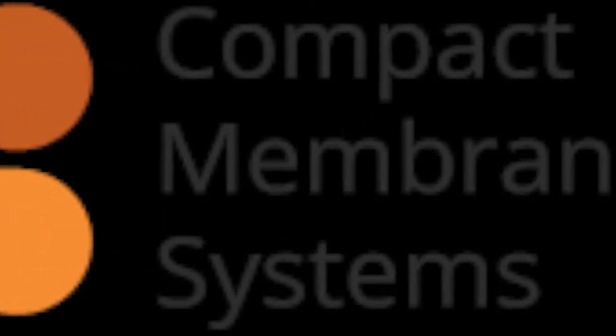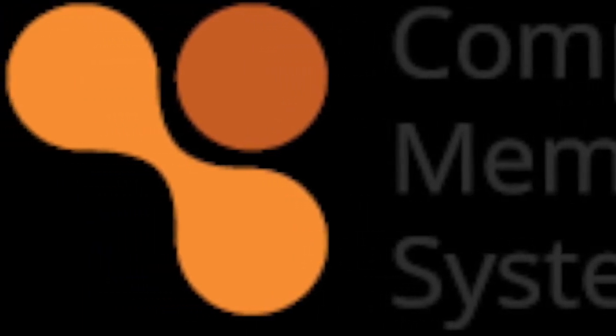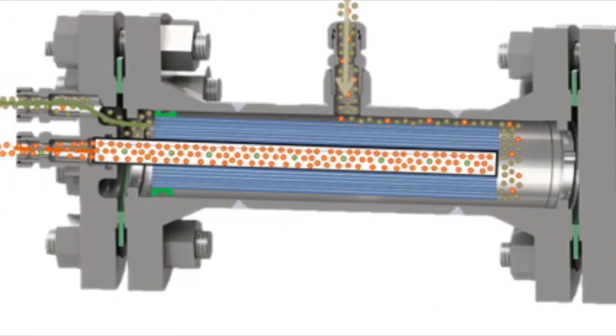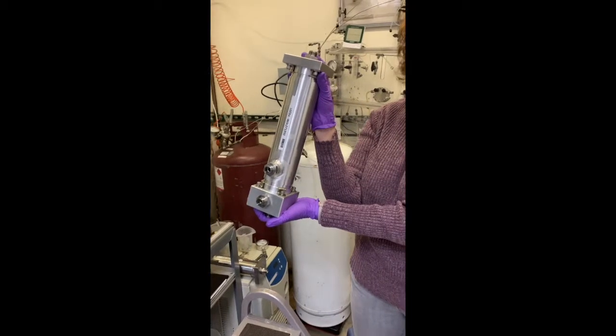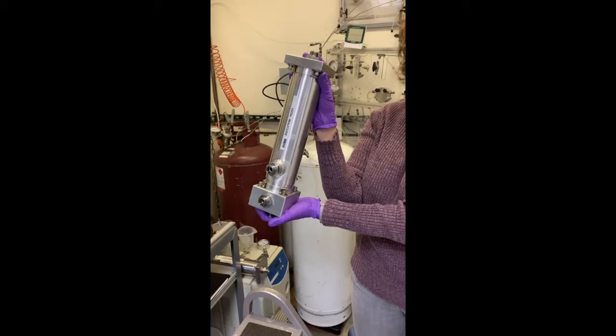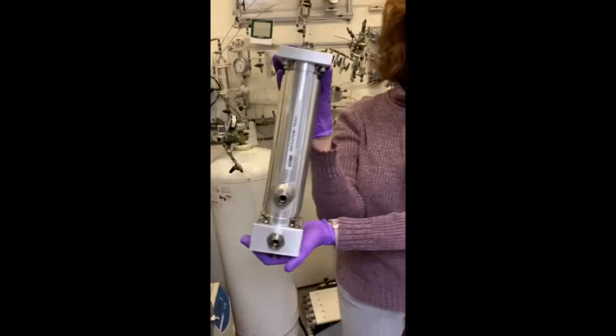Compact Membrane Systems prides itself on being a leader in the field of difficult chemical separations. Our proven membrane technology is chemically resistant and its modular design allows systems to fit into a variety of spaces. Today we are going to take a look at one of our solvent dehydration systems in action with the help of our R&D technologist Robin.